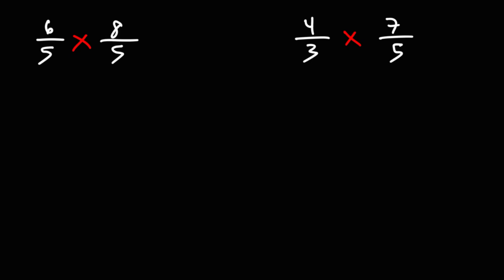In this video, we're going to talk about how to multiply improper fractions. So just to recap, an improper fraction is a fraction where the numerator is equal to or greater than the denominator.